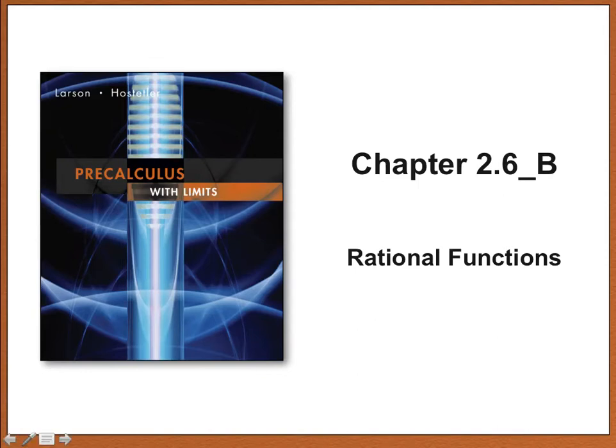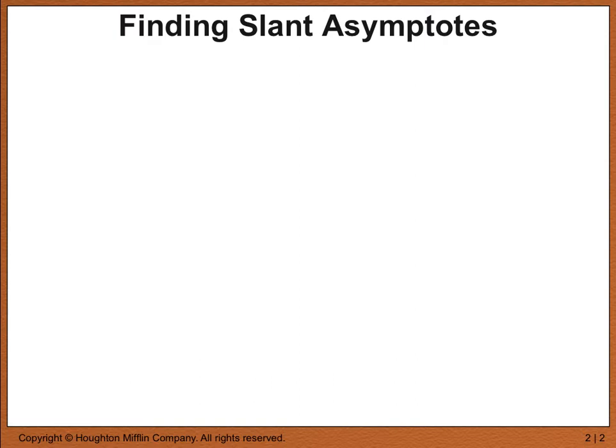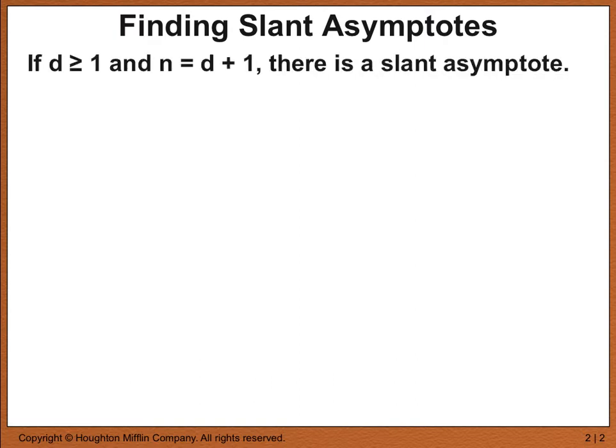This is section 2.6b, Rational Functions. Today we're going to learn about finding slant asymptotes. So far you've been able to find vertical asymptotes and horizontal asymptotes, and today we'll learn about slant asymptotes. So if d is greater than or equal to 1 and n equals d plus 1, there is a slant asymptote.